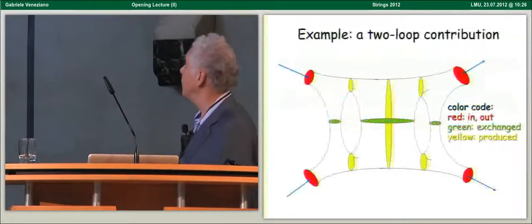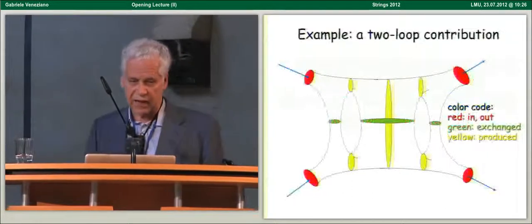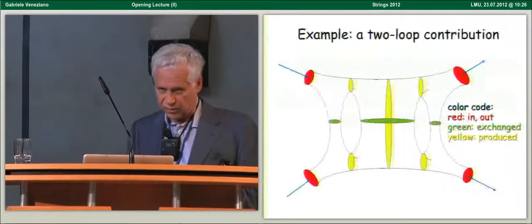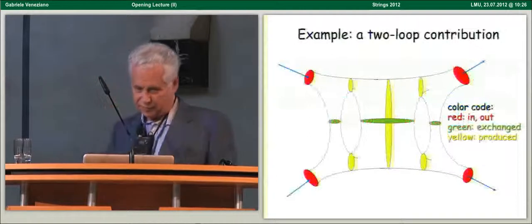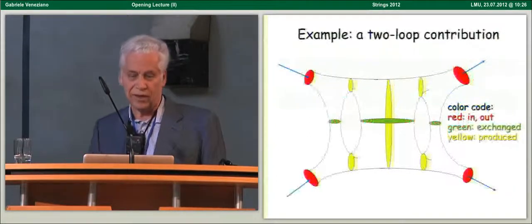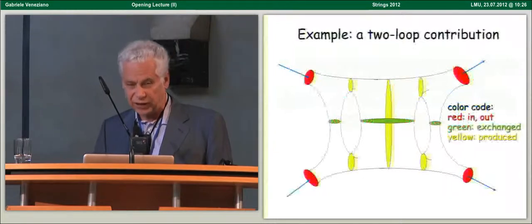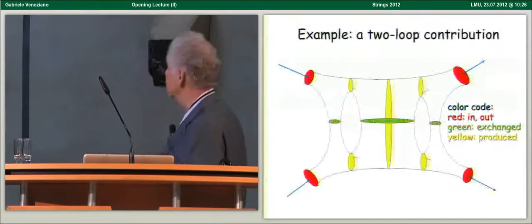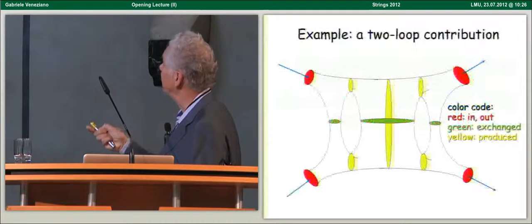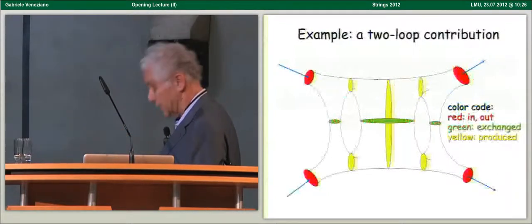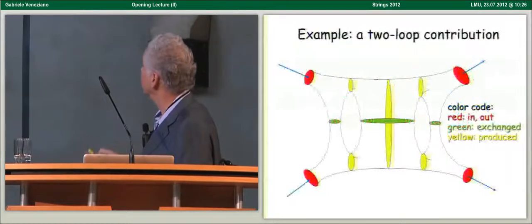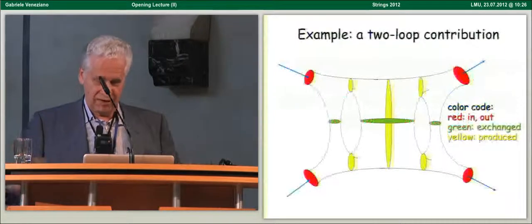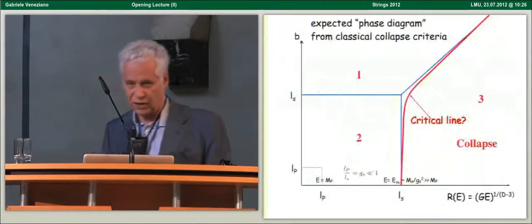And, so, this is just an example to show you the kind of physics we are trying to extract. The color code is that in red you have the incoming and outgoing closed strings. In green you have the exchanged closed strings which are essentially at high energy reggeized gravitons. And, in yellow you have the strings you produce. For instance, in here you can excite the initial massless string into something heavy. Here, this big yellow string is some formation of a very massive closed string in the S channel.